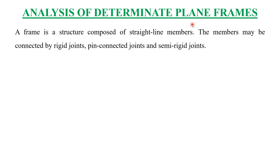A frame is a structure composed of straight line members. These straight line members may be vertical, horizontal, or inclined, but they will always be straight line members. The members may be connected by rigid joints, pin connected joints, or semi-rigid joints.